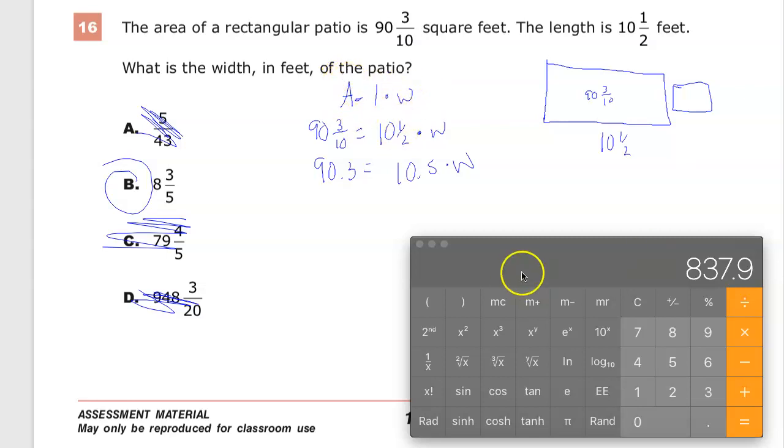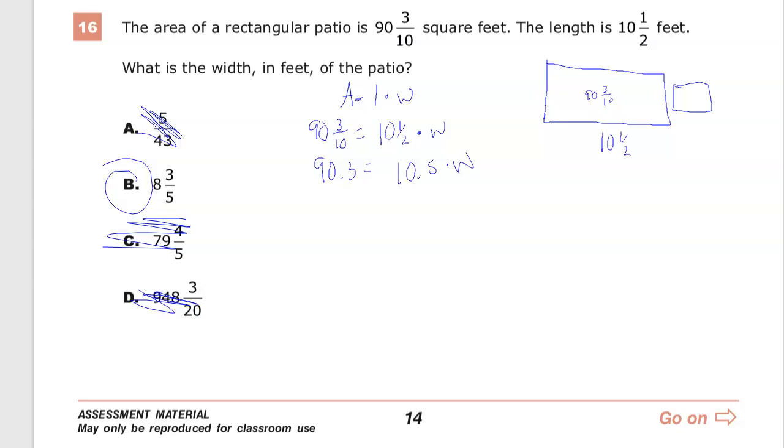But what did they really want you to do? Now I'll get to that part. What they really wanted you to do is think, okay, well, if this is an equation that I'd have to solve, the opposite, I need to get W by itself. So I need to do opposite operations. I need to divide. So they wanted you to take this step here. And they wanted you to divide both of them by 10.5.